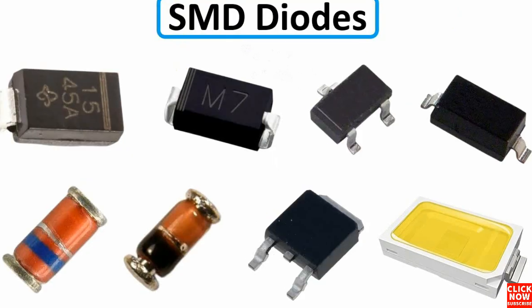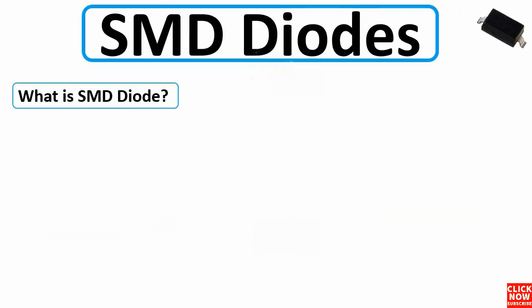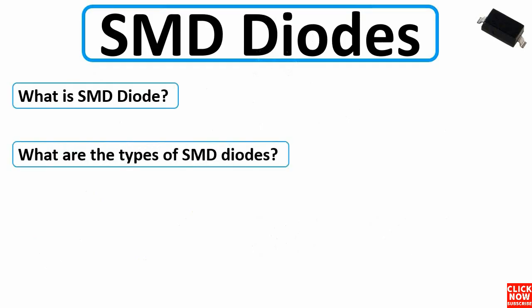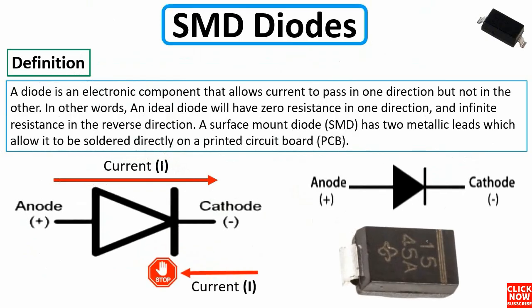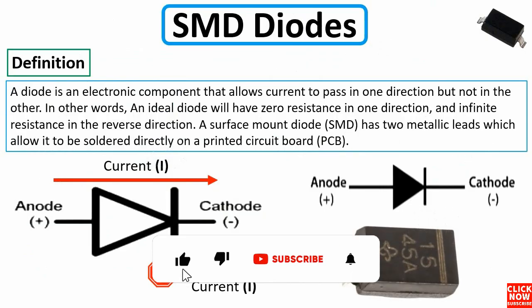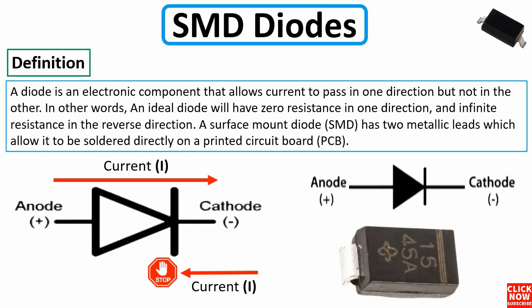We're going to see all types of diodes, but first let's answer some questions: What is an SMD diode? What are the two types of SMD diodes? And what are the symbols of SMD diodes? A diode is an electronic component that allows current to pass in one direction but not in the other. An ideal diode will have zero resistance in one direction and infinite resistance in the reverse direction.